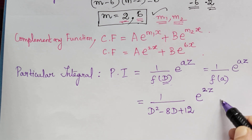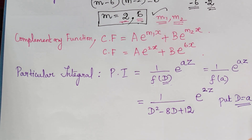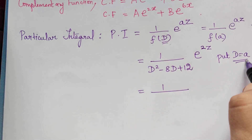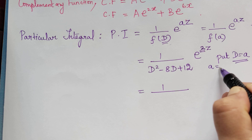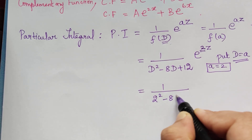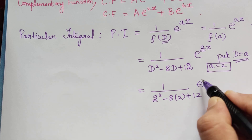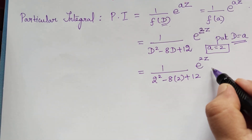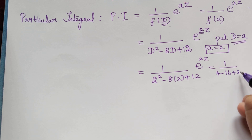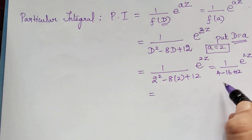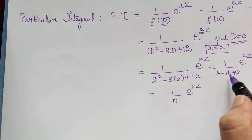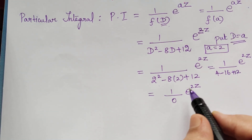We see that the denominator becomes 0, because 4 − 16 + 12 = 0. So this gives 1/0·e^(2z), and since the denominator is zero, this cannot be the particular integral directly. We need to apply the special case formula.